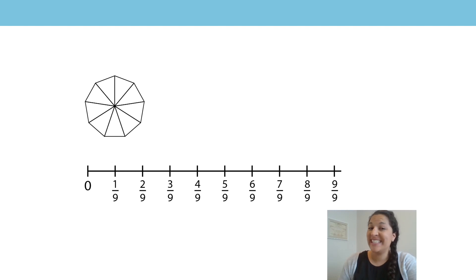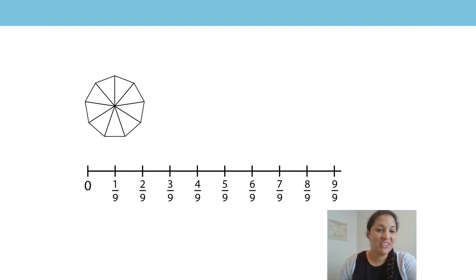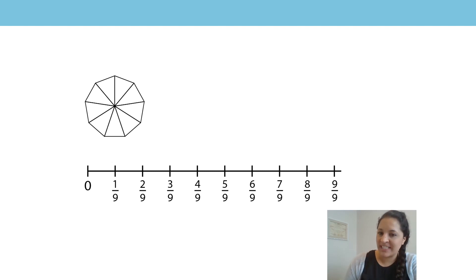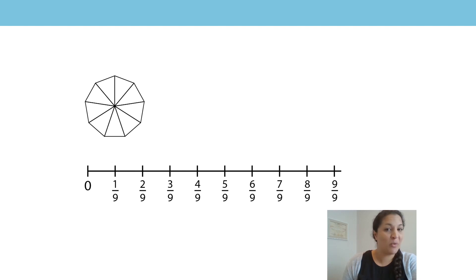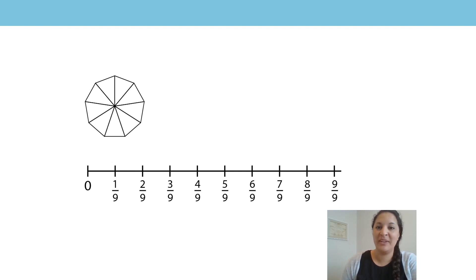We're going to continue to practise our counting in unit and non-unit fractions on a shape and on a number line. Have a look at the shape and have a look at the number line. How many equal parts has the whole been divided into? That's right, nine equal parts. So our unit fraction is one-ninth.